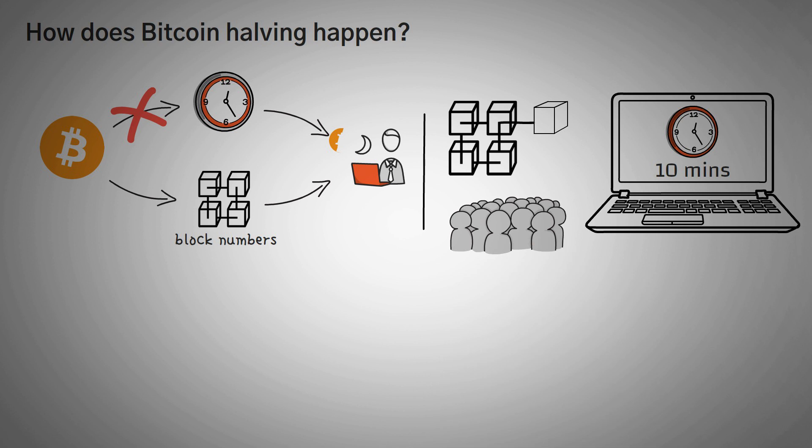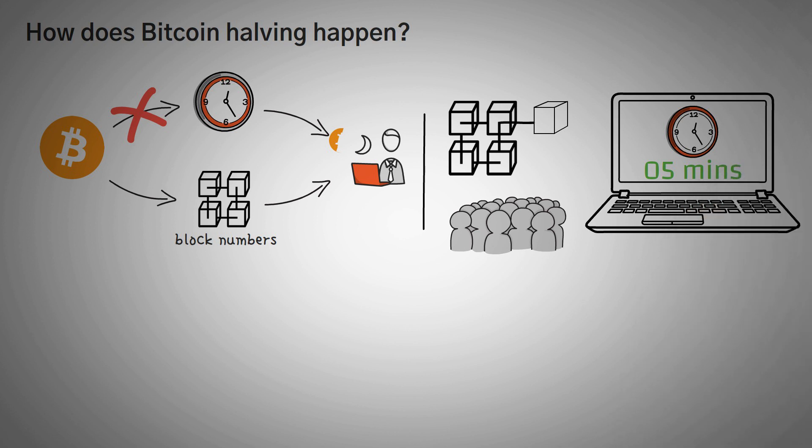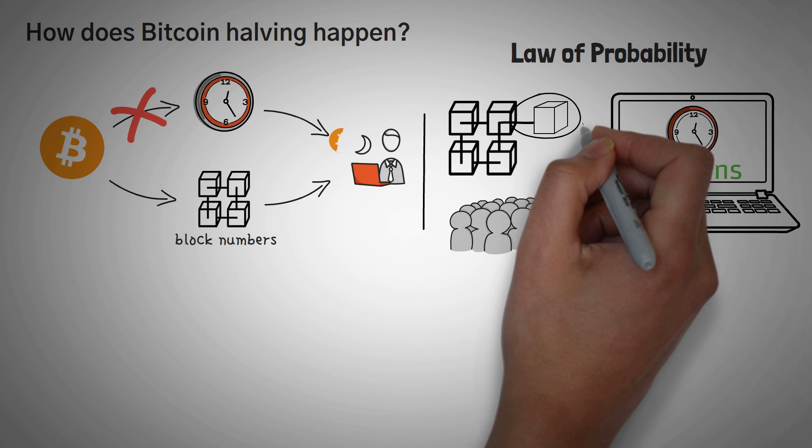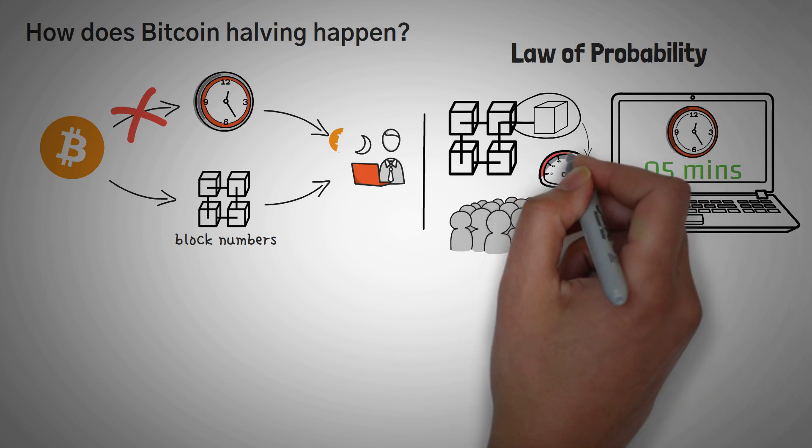But, you might be asking, what if a ton of new miners join, and then because of that, the block is solved every 5 minutes? Because there's more people attempting to solve it, and by the law of probability, the rate at which the math problem is guessed is quicker. What happens then?